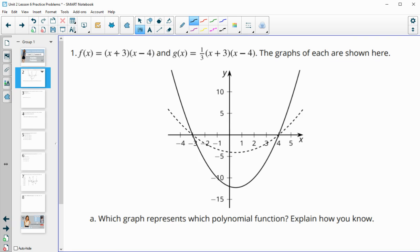Number one says that f of x is the function x plus 3 times x minus 4, and g of x is one-third of x plus 3 times x plus 4. The two graphs are shown below. Which graph represents which polynomial function?